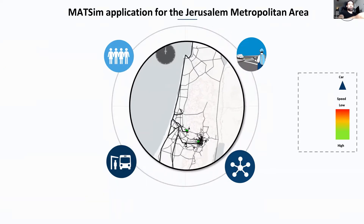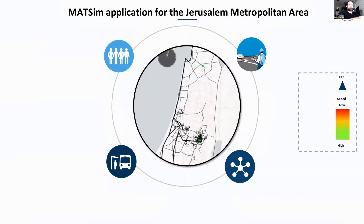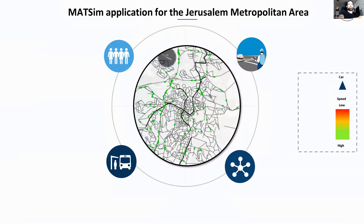Here you can see Jerusalem with traffic moving inside — private cars with different speeds. We also have public transport, and the color represents the capacity of people inside the model.